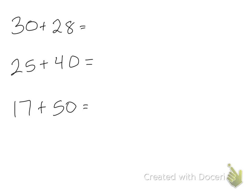So here I have 30 plus 28. So I think, okay, we add the tens place first. So 3 plus 2 is 5 and then there's 8 more.